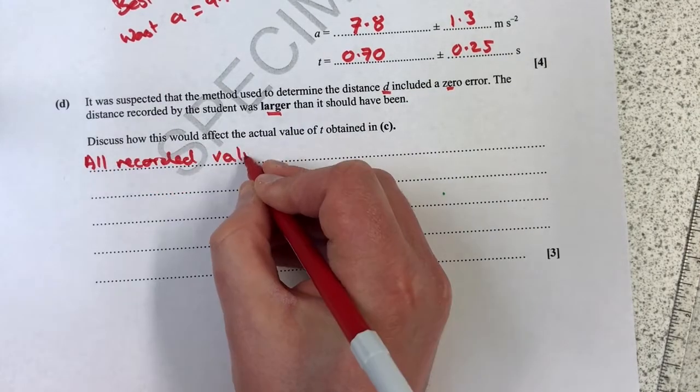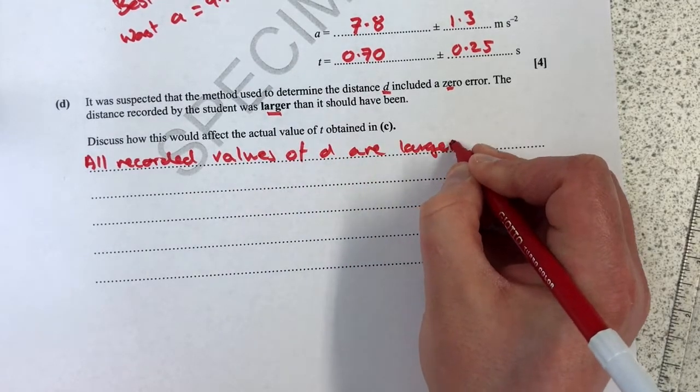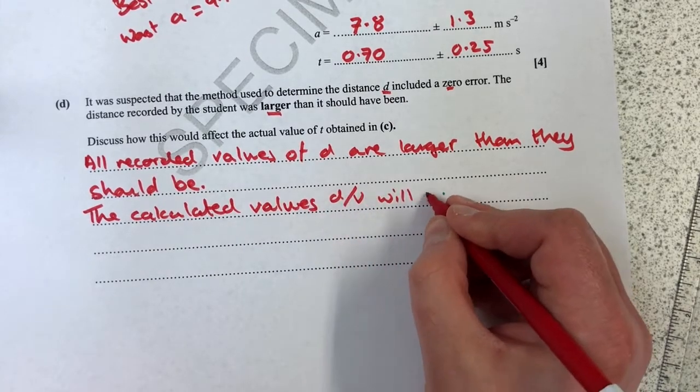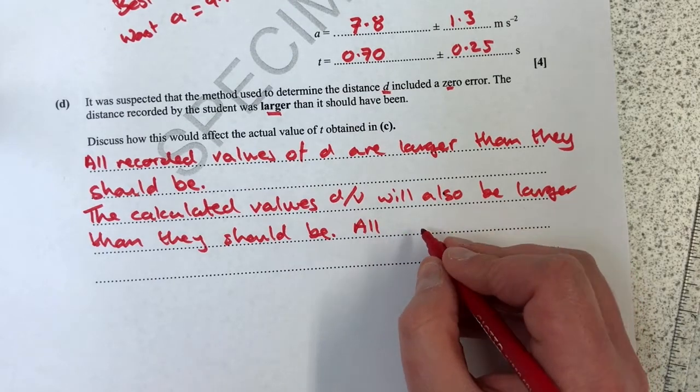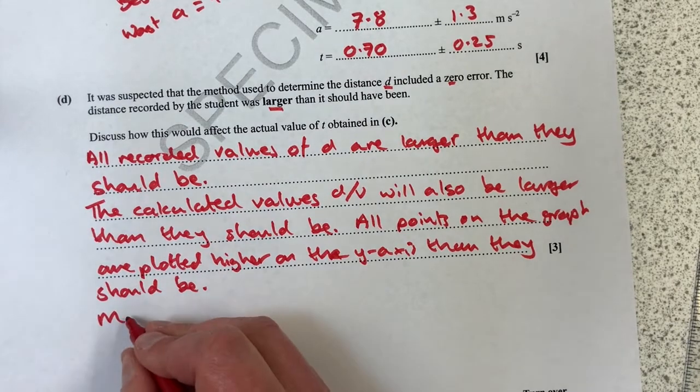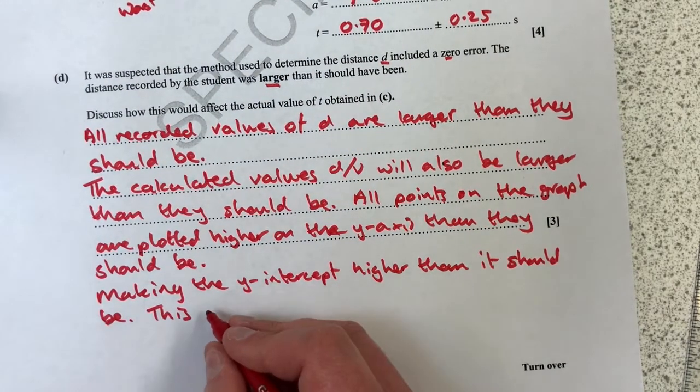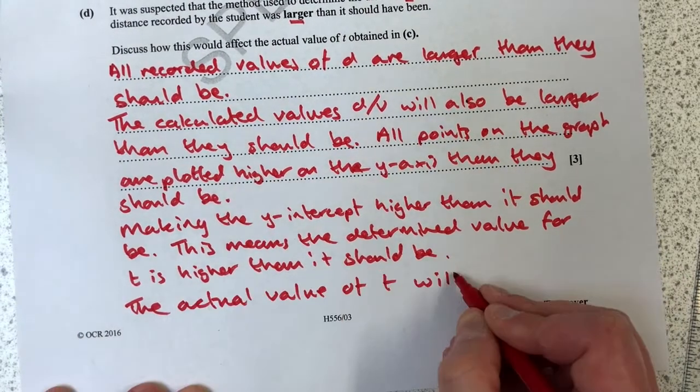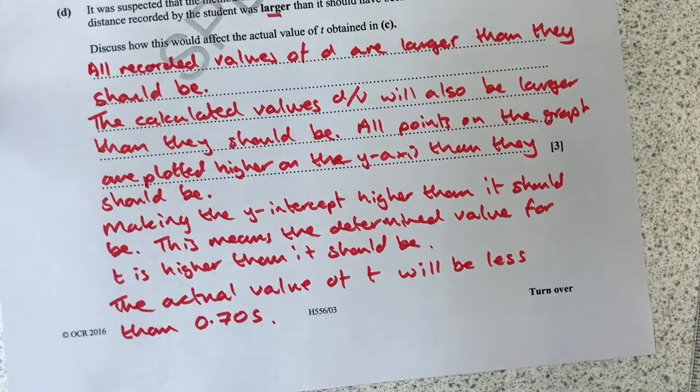Let's do it step by step. All recorded values of d are larger than they should be. The calculated values d over v will also be larger than they should be. All points on the graph are plotted higher on the y-axis than they should be, making the y-intercept higher than it should be. This means the determined value for t is higher than it should be. And then just to make it clear at the end, nice little punch line: the actual value of t will be less than 0.70 seconds. First two questions done.